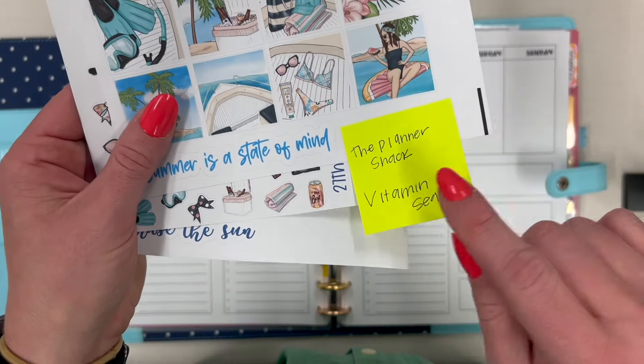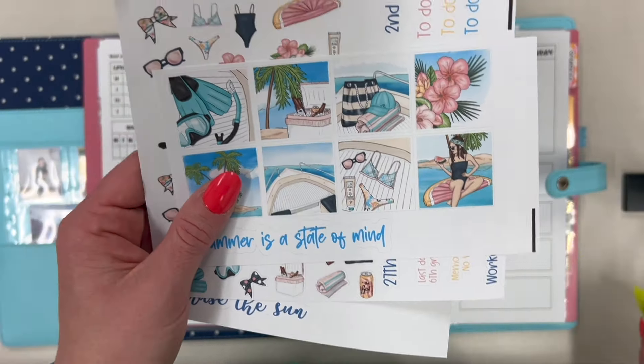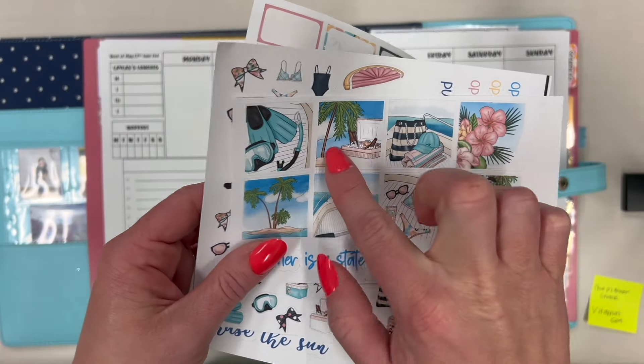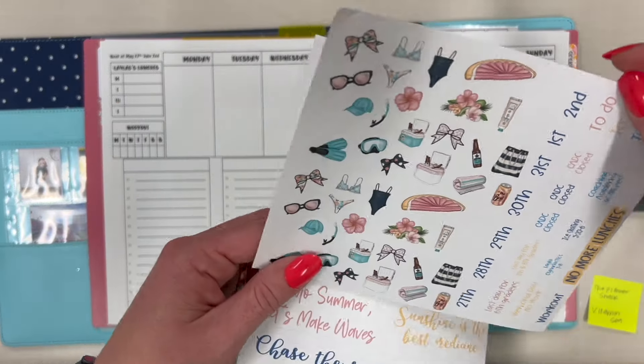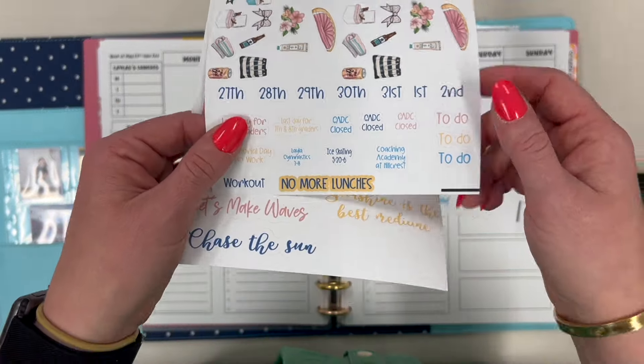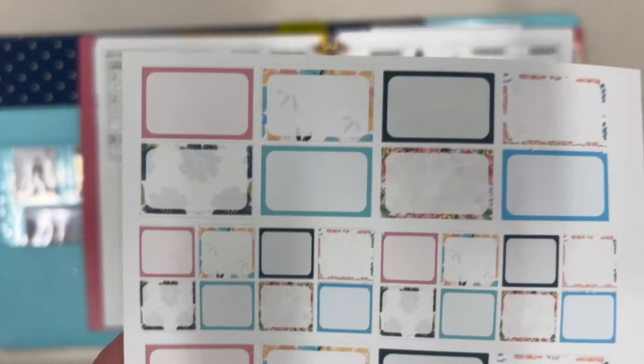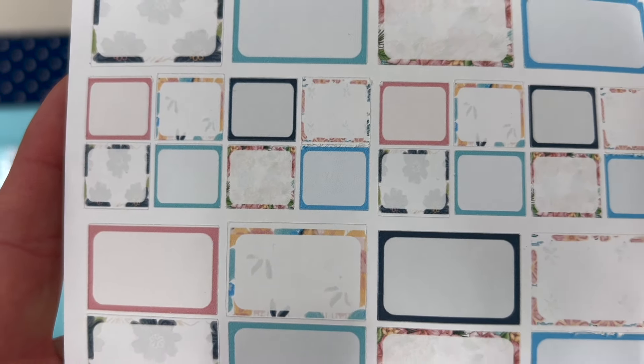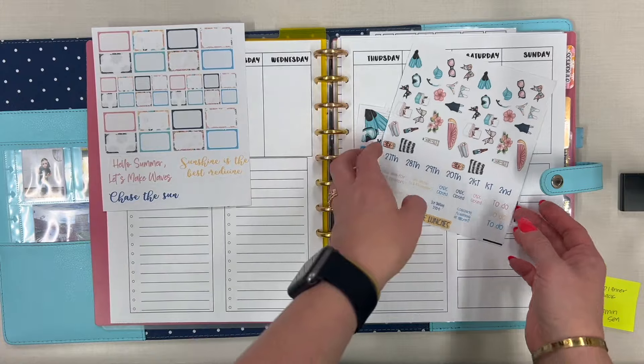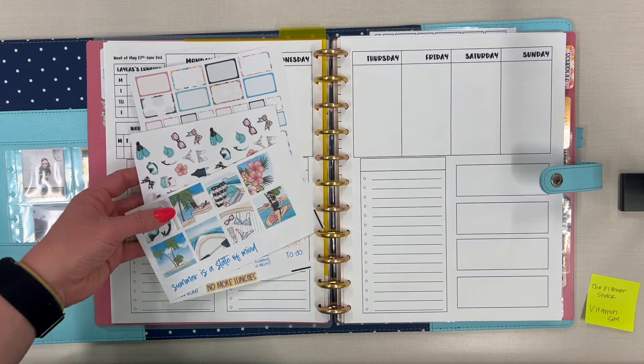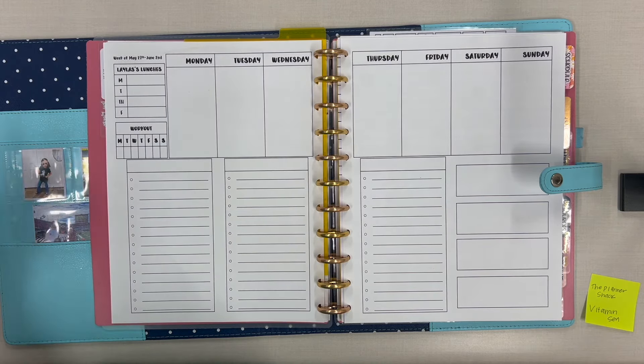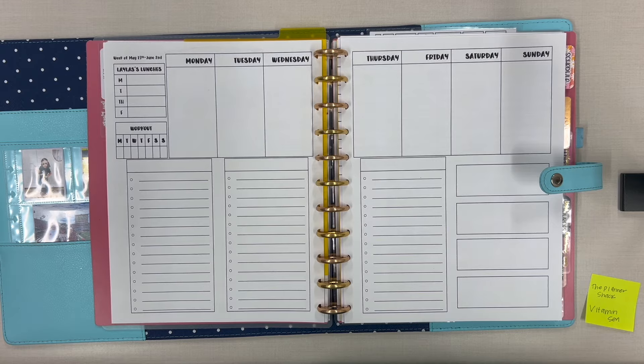This week I am going to be using this kit from the Planner Shack. It's called Vitamin C and it's actually a mini kit. I made it down even more so that it could fit in these boxes. I thought it would be fun to use the deco. I did create some words and stuff and I even made some quotes as well. I wanted to use this kit because why not. If you are interested in seeing this plan with me, then just stick around.